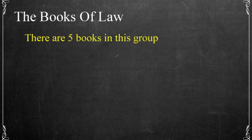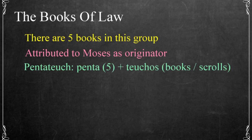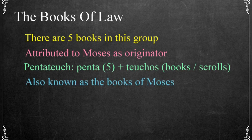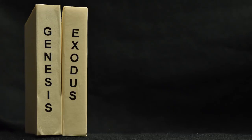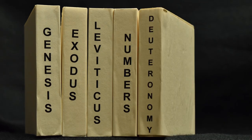There are five books in this group attributed to Moses as the originator. Collectively, they're also known as the Pentateuch, a word derived from the Greek prefix penta, meaning five, and teuco, meaning book, vessel, or tool. They're also known as the books of Moses. These books are Genesis, Exodus, Leviticus, Numbers, and Deuteronomy.